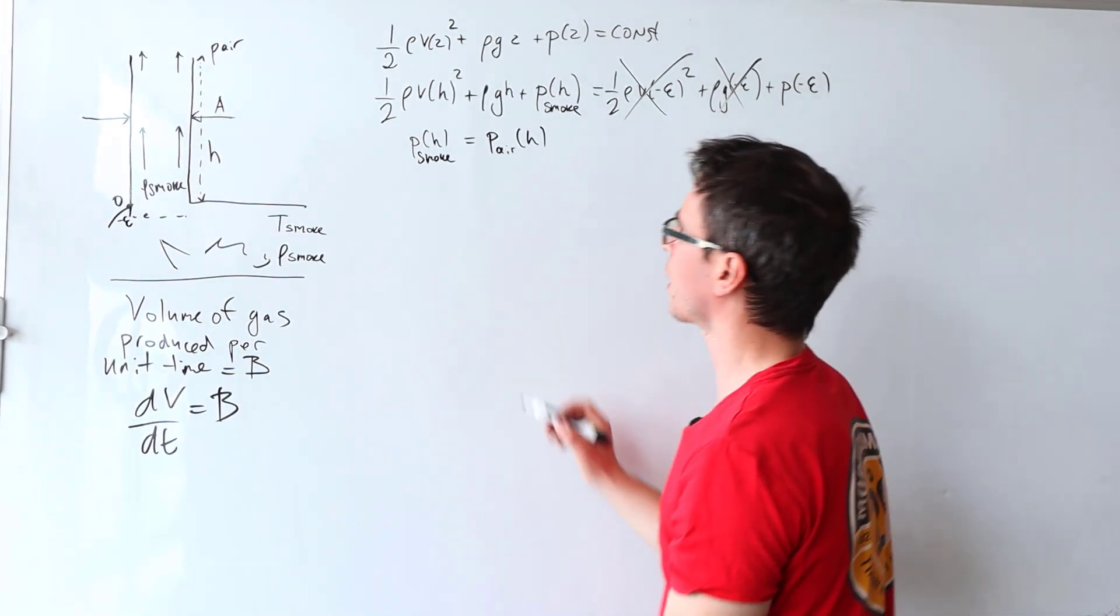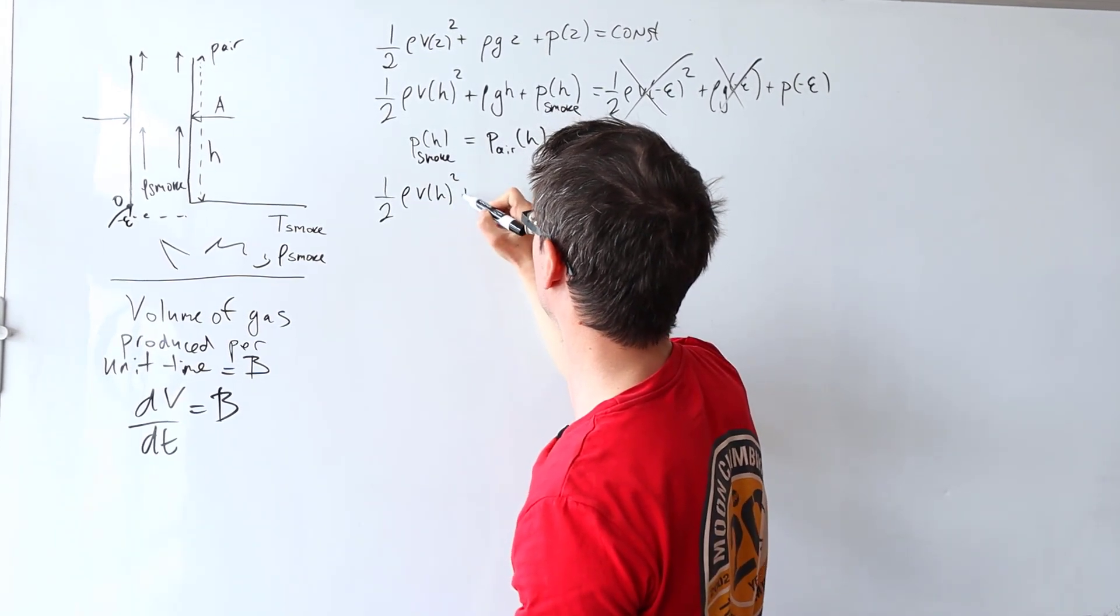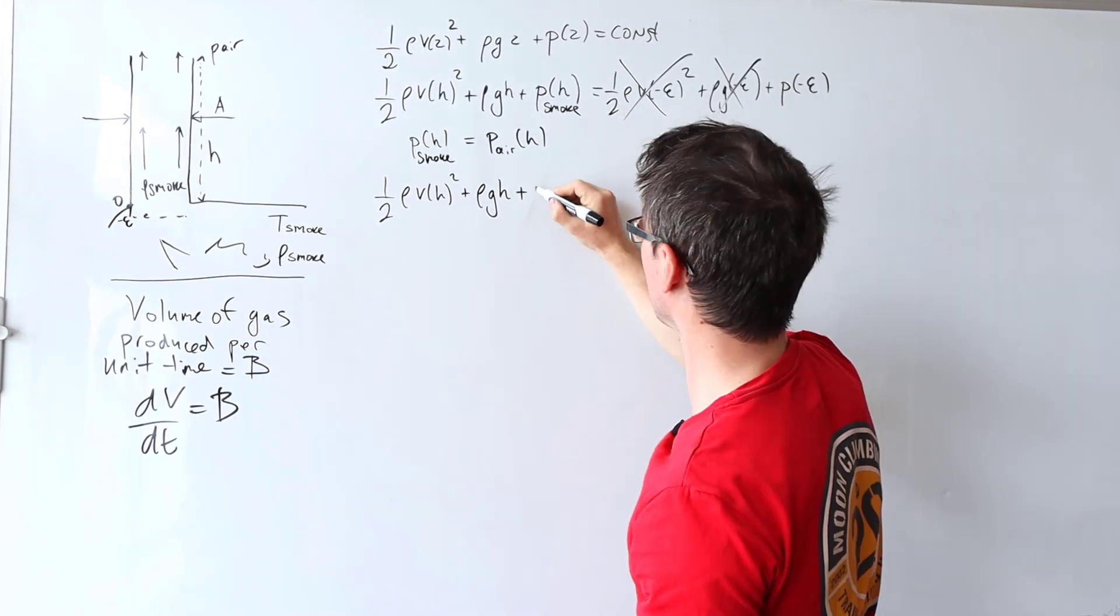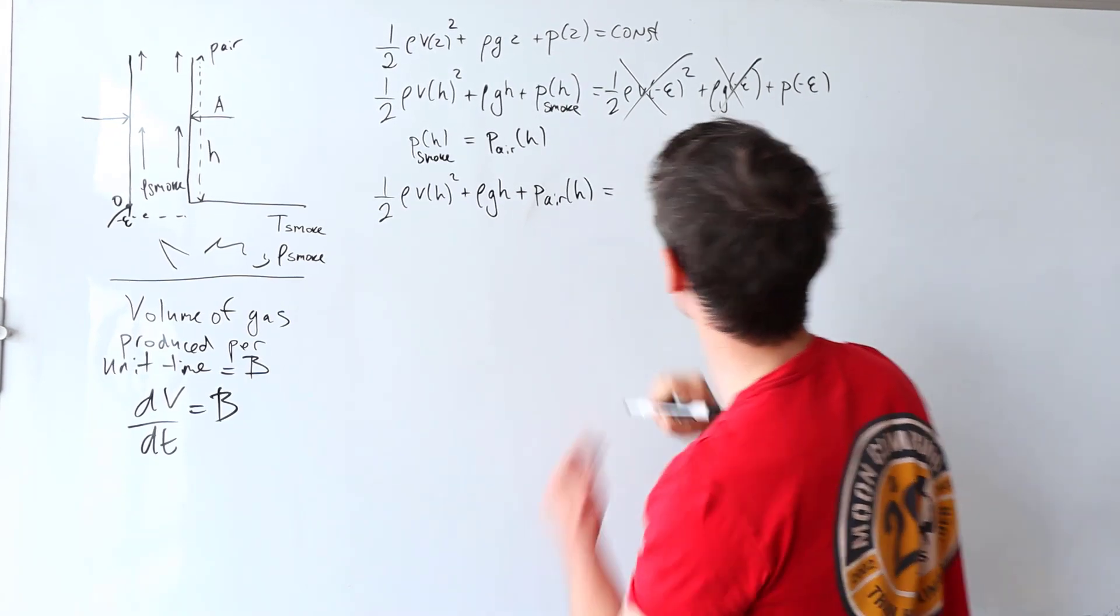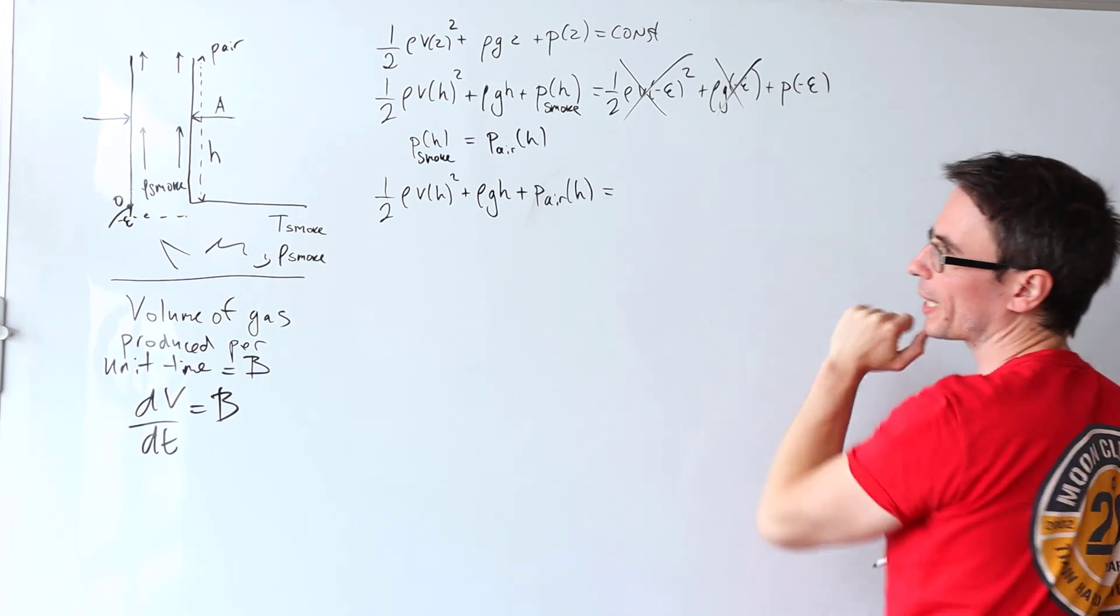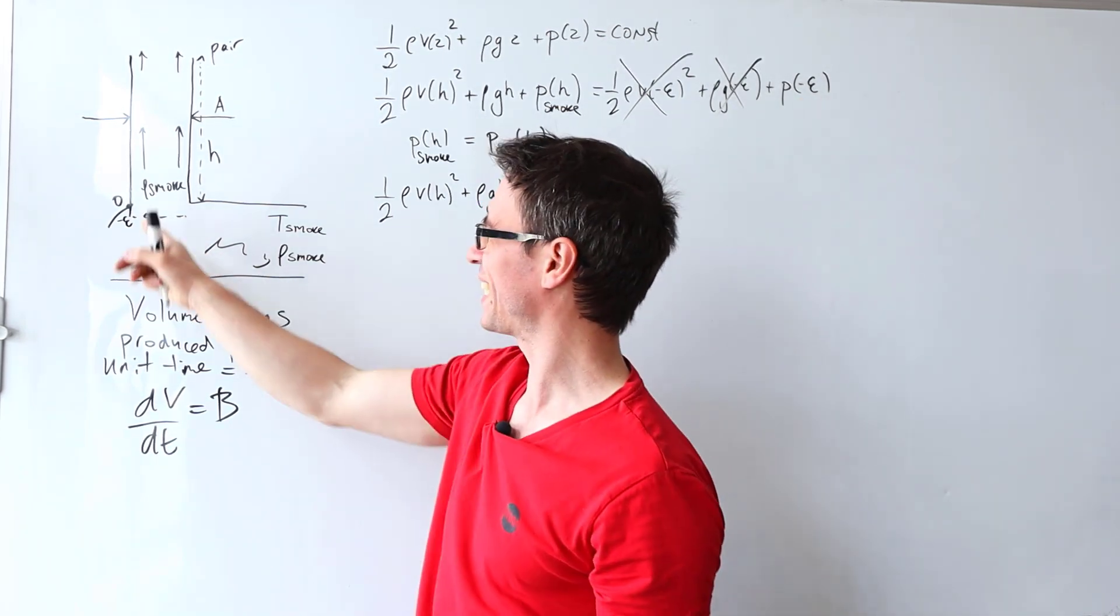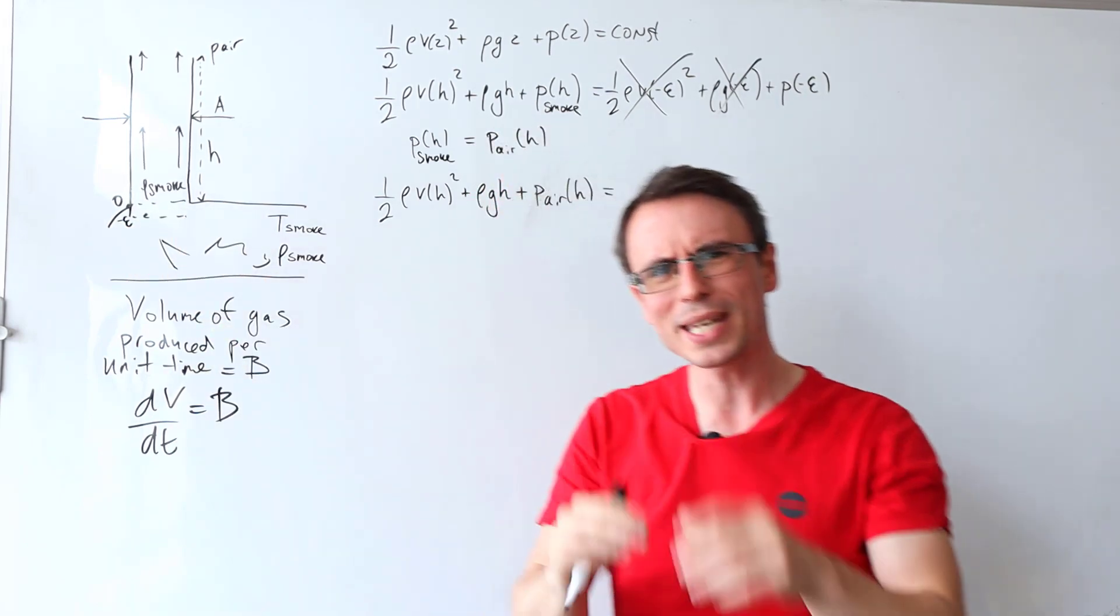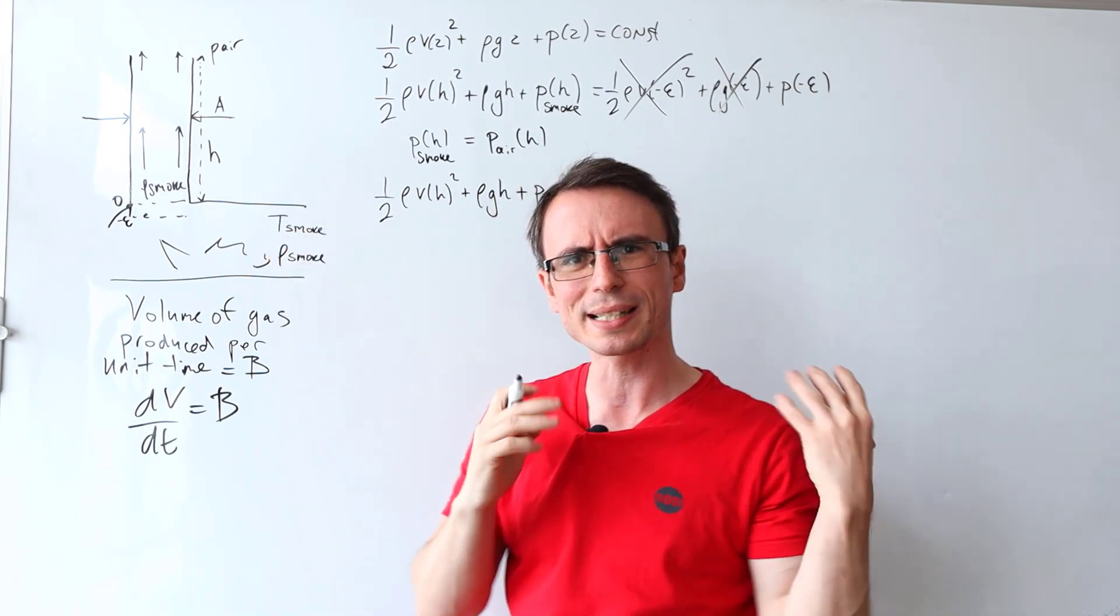So let's just rewrite our equation. So I'm going to go a half rho V of h squared plus rho g h plus p of air times h will be given by now we only have one term here which is the pressure at a small infinitesimal value just underneath this line here, which should be equal to the air pressure at this level.